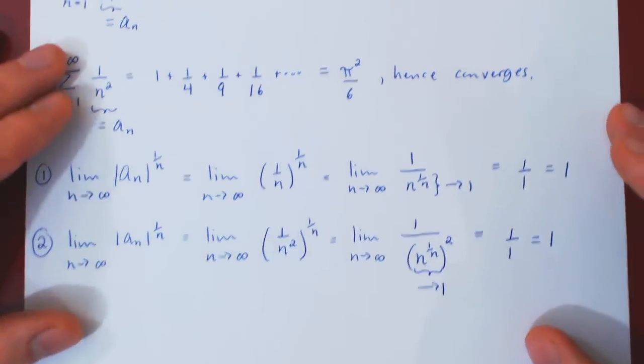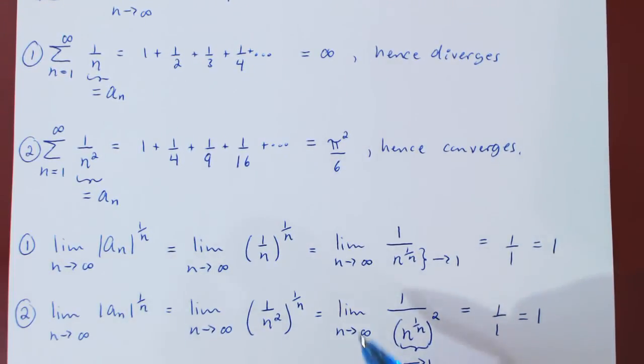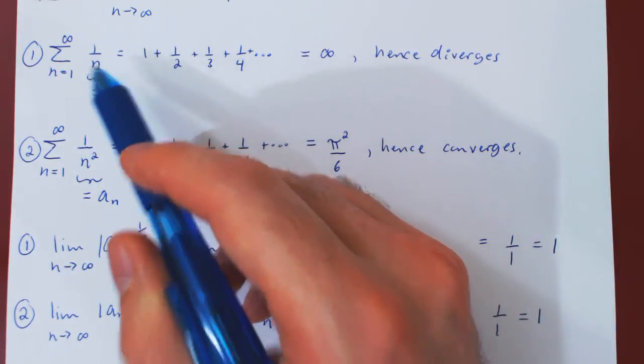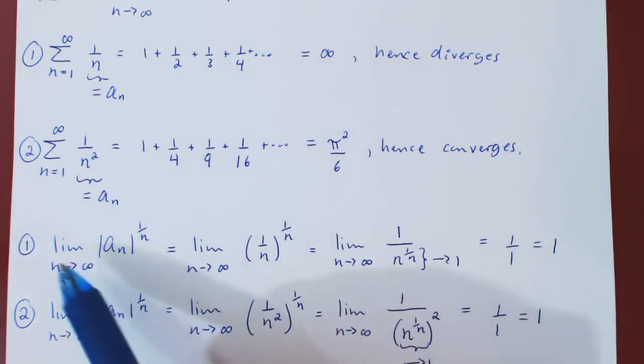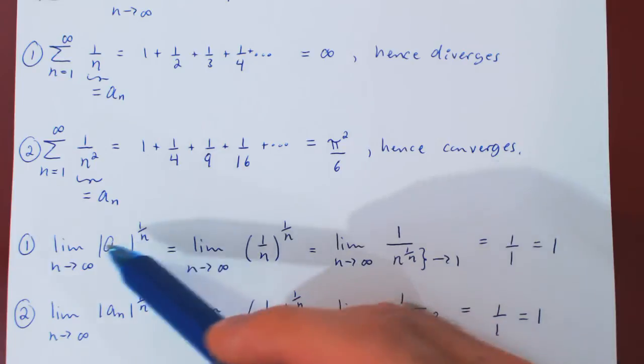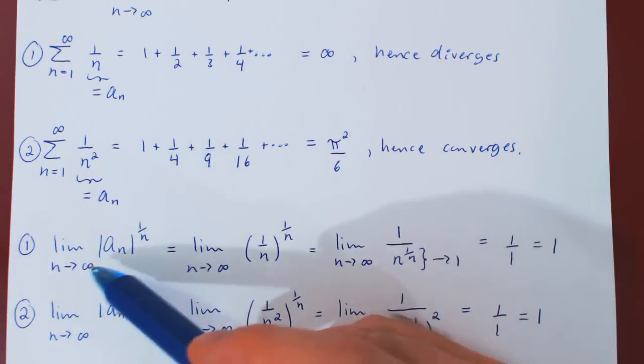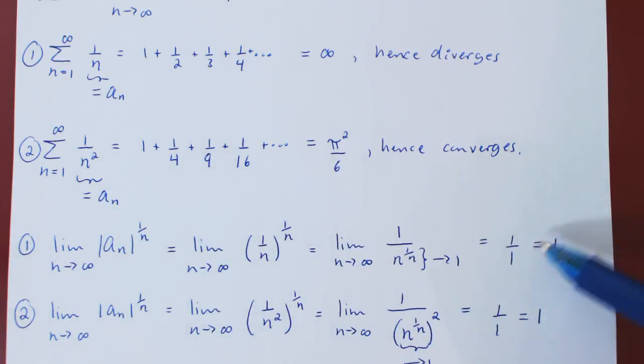And this completes our proof. So we have two series: the series of 1 over n, and of 1 over n squared as n tends to infinity. In both cases, the limit of the nth root of |a_n|, as n tends to infinity, is equal to 1.